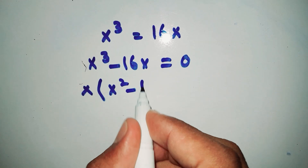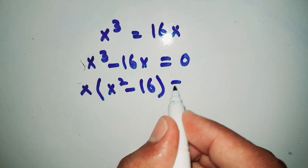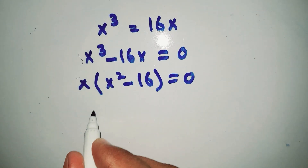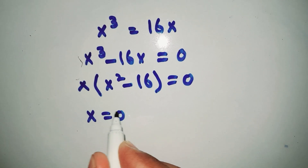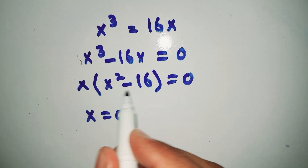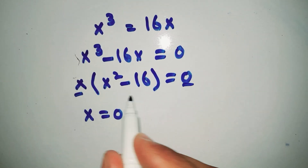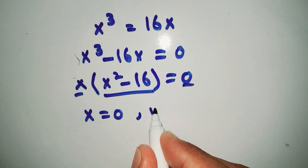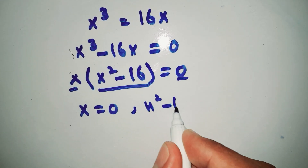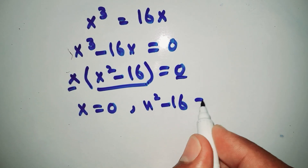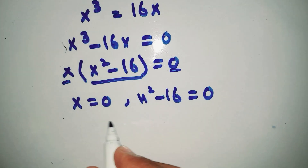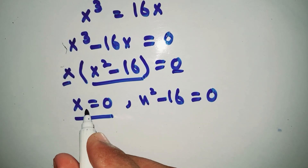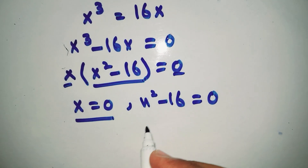So x squared minus 16 is equal to 0. This gives us x is equal to 0 as one solution, and x squared minus 16 is also equal to 0. So we have found one value of x, which is 0, and now we find the other two values.